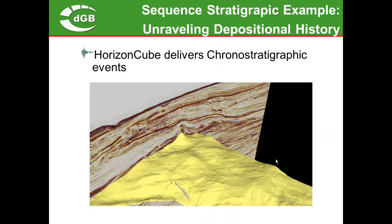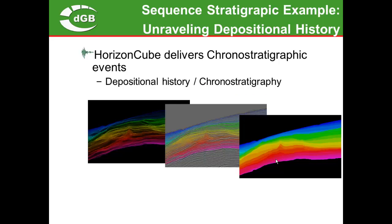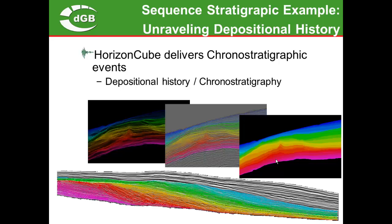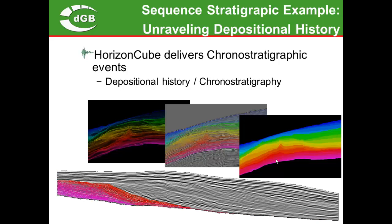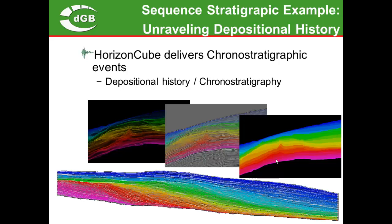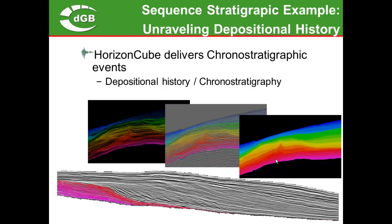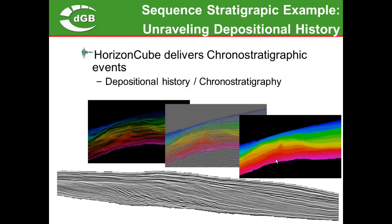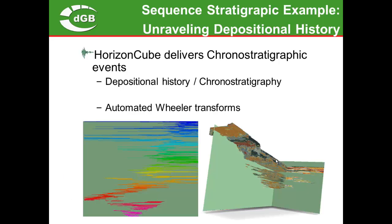Sequence stratigraphy is another example. If we look at one seismic reflector, we are essentially looking at a geologic timeline. If we map all the reflections in a seismic volume, we are mapping geologic time, which allows us to reconstruct the depositional history over time. Here the HorizonCube is shown progressing over geologic time, with different stacking patterns emerging as we continue in time. We can then use these horizons to perform the Wheeler transformation, in which the vertical axis becomes relative geologic time.